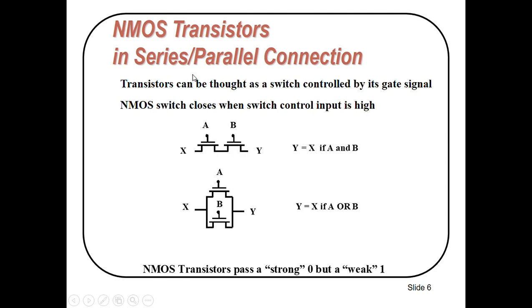N-MOS transistors in series or parallel connection: N-MOS transistors turn ON when we apply high gate voltage. To implement the function A AND B (A·B), it means A and B are in series — we represent this with N-MOS transistors in series combination. For the function A OR B, A and B are now in parallel — here you can see A and B in parallel. N-MOS transistors pass a strong 0 but weak 1.